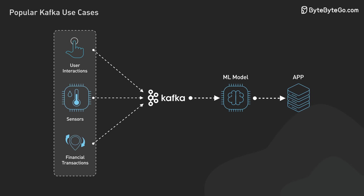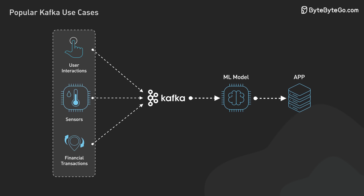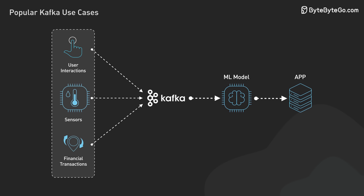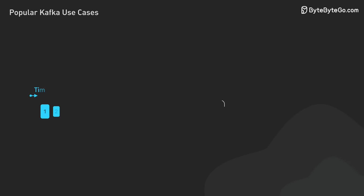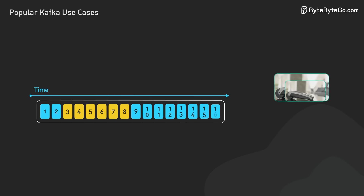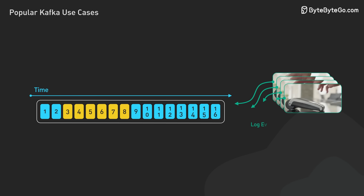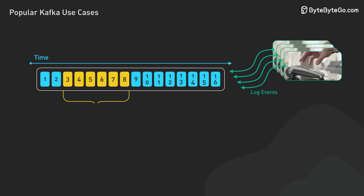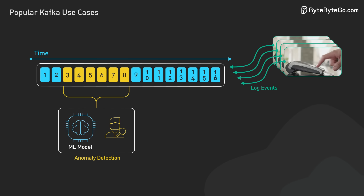This data flows through Kafka to ML models in real time. For example, in a fraud detection system, Kafka streams transaction data to models that flag suspicious activity instantly. In predictive maintenance, it might funnel sensor data from machines to models that forecast failures.